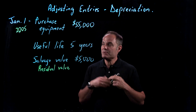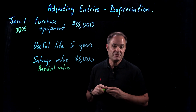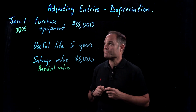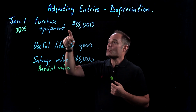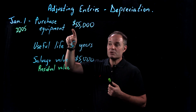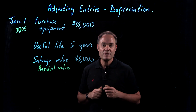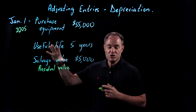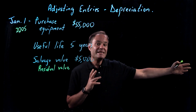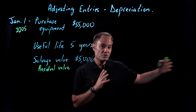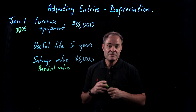Kind of like if you buy a car and plan to keep it for a certain number of years and then sell it — that would be the residual value, what you think you're going to sell it for in the future. Under cash accounting, we would record an expense on January 1st of $55,000, and then there'd be no expense for the remaining five years, despite the fact that the company gets benefit from this machine.